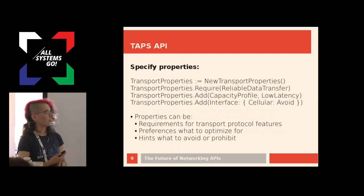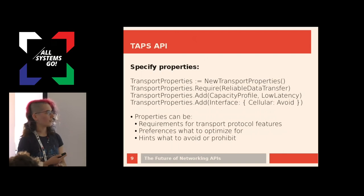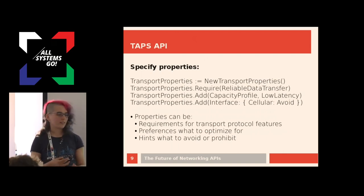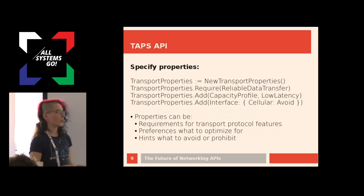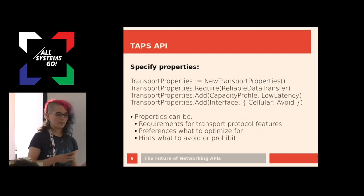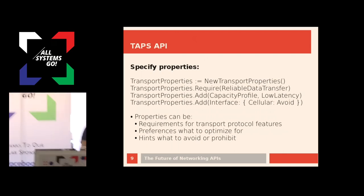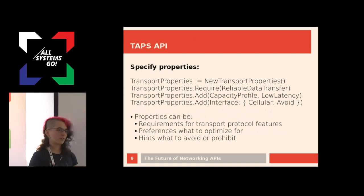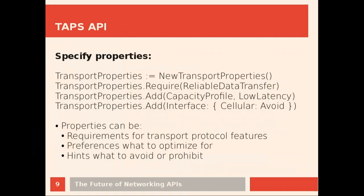You can add more properties to the transport properties object that is tied to the pre-connection. For example, we have this nice thing called capacity profile, which says: do I want the new connection to be optimized for low latency, or would I like to optimize it for high bandwidth? Based on that, the transport system could do different things — enable some algorithms or choose a different path. Or maybe this is just background traffic, and we call that scavenger mode, where it just takes all the capacity that it can if nobody else is using it. That would be a different congestion control algorithm.